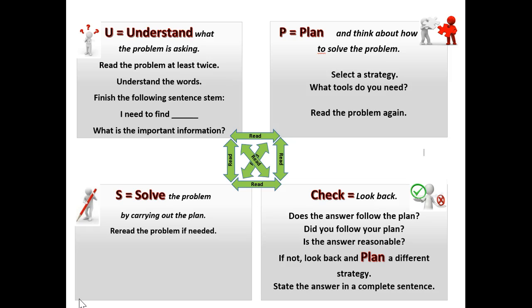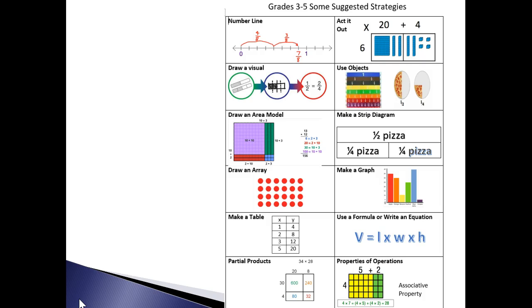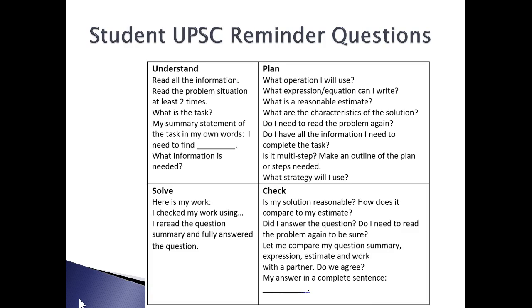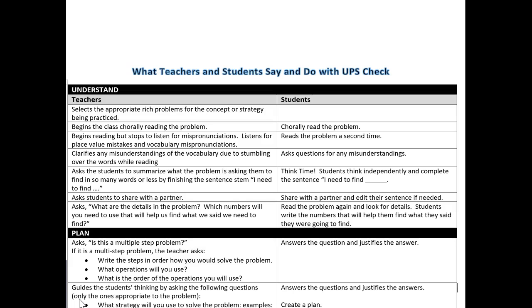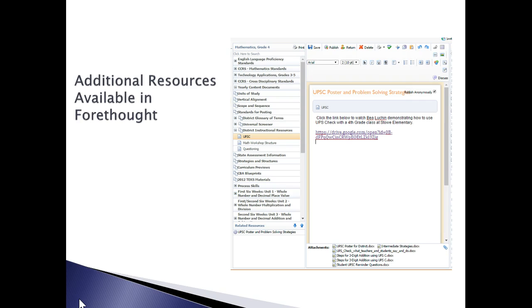Now I want to make sure that everyone has the posters and strategy posters that were given. If you have not received the UPS poster or the strategy poster, please let me know. Email Mary Valamedes so that I can make sure you get those posters. Also, please go back and check in Eduphoria. I've added some things for UPS check. Notice that this is something that you can actually give the kids to put in their journals or put it on their desk so that they can ask themselves these questions as they struggle with certain problems. Also, I've updated the sheet that says what teachers and students say and do with UPS check so that you can use this to kind of guide you as you ask kids the questions for UPS check. Now, these resources are all available in Forethought. If you go in Forethought, go to Yearly Content Documents, District Instructional Resources, and then click UPS check. When you do, then you'll see the gear at the bottom that says UPS poster and problem solving strategies. And then when you click that gear, you'll see these attachments that will open up as well.